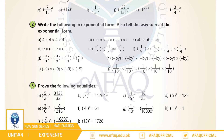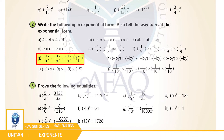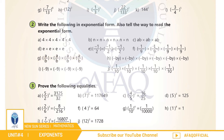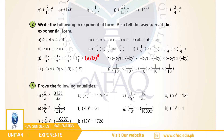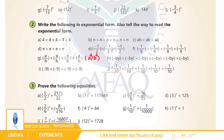بچو اسی طرح سے ہمارے پاس ہے part G: a/b multiplied by a/b multiplied by a/b multiplied by a/b multiplied by a/b — تو بچو اس کا exponential form ہوگا (a/b) to the power of 4، اور مزید simplify کرنے سے یہ بنے گا a to the power of 4 by b to the power of 4۔